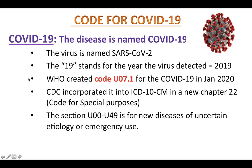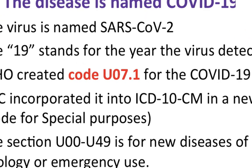The novel coronavirus was identified in Wuhan, China in December 2019, and then spread throughout the world, sending billions of people into lockdown. Millions of people have been infected, and more than 200,000 people have been killed by this virus as of today. In January 2020, the World Health Organization declared COVID-19 a global pandemic and created the emergency code U07.1 for COVID-19.